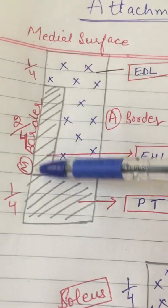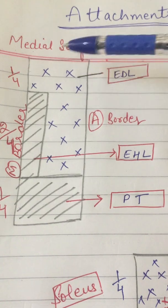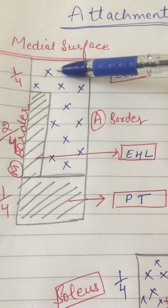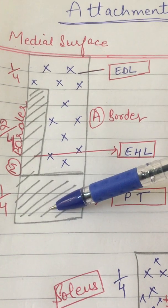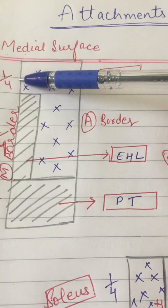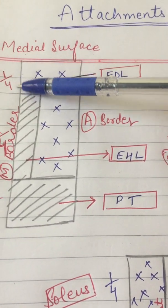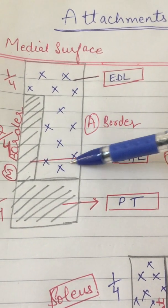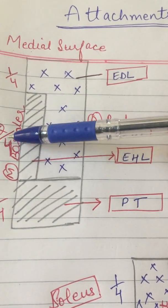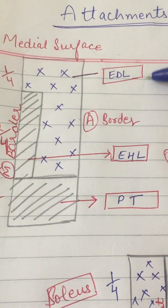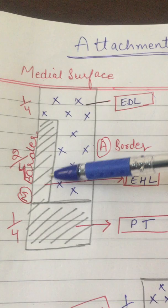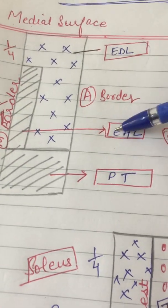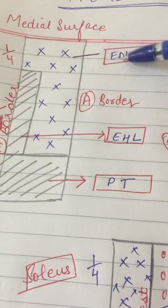I have divided this medial surface into three areas: upper one-fourth, middle two-fourths, and lower one-third. From the upper one-fourth and the anterior part of the middle two-fourths there is the origin of the muscle extensor digitorum longus. From the posterior part of the upper one-fourth, the muscle which arises is extensor hallucis longus.